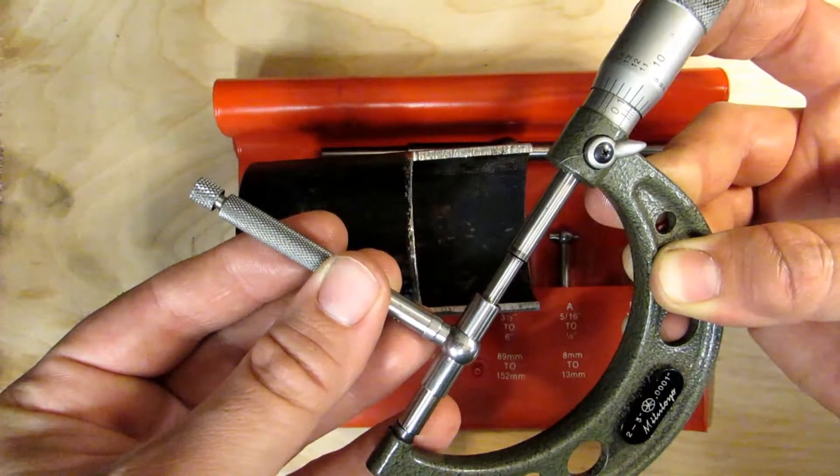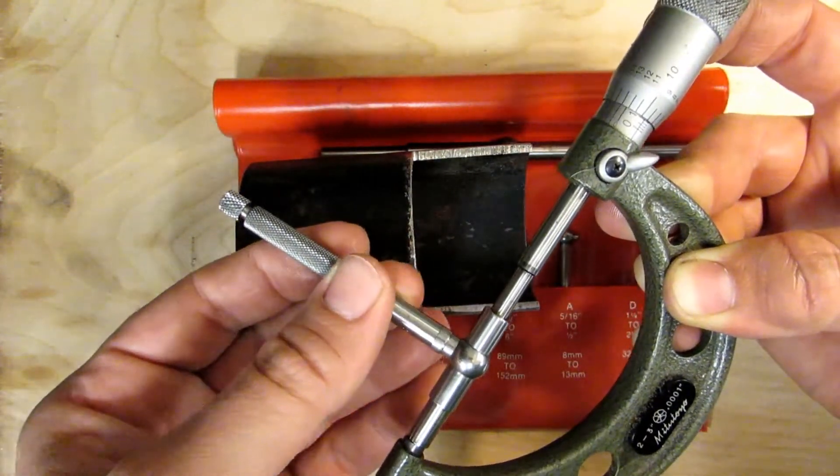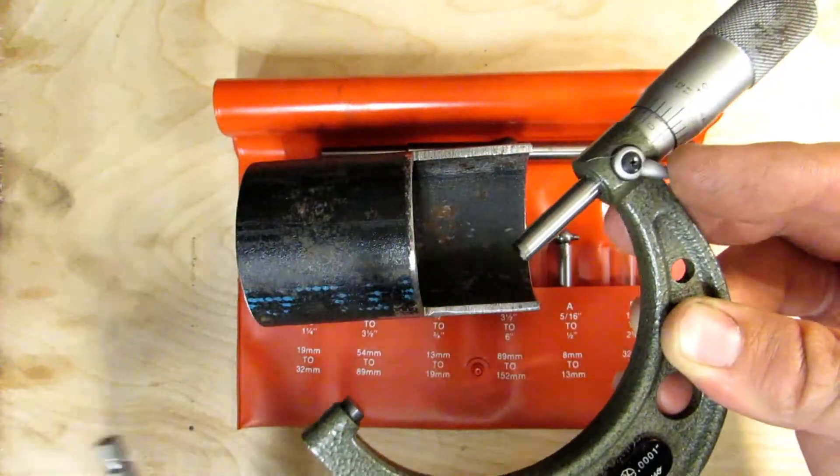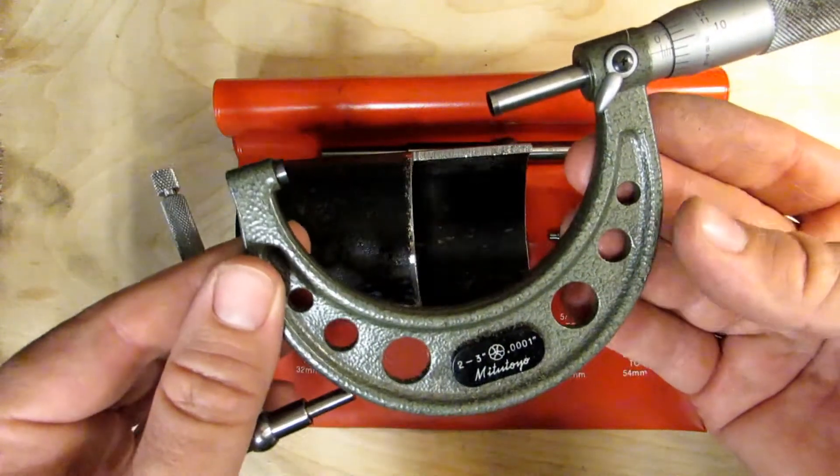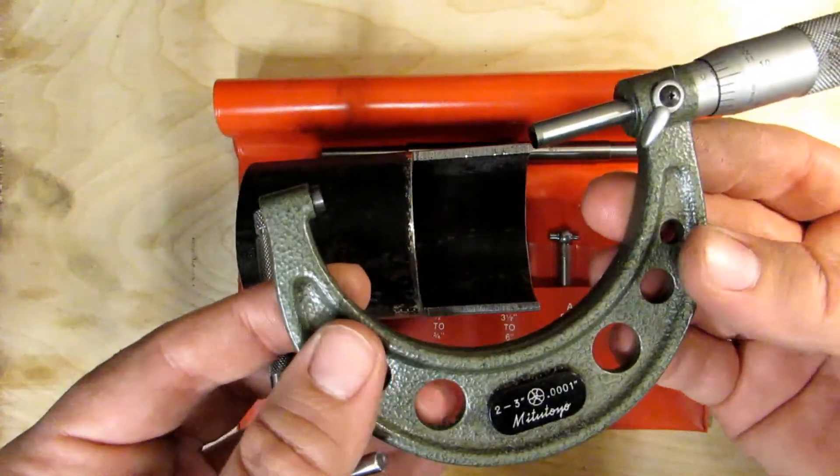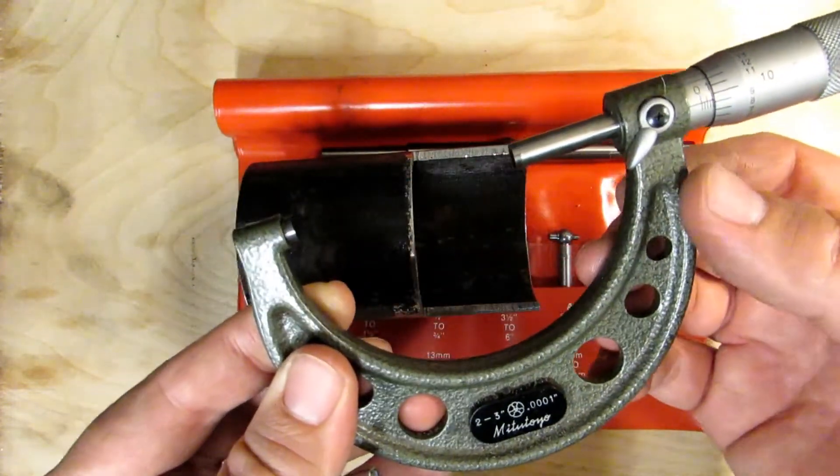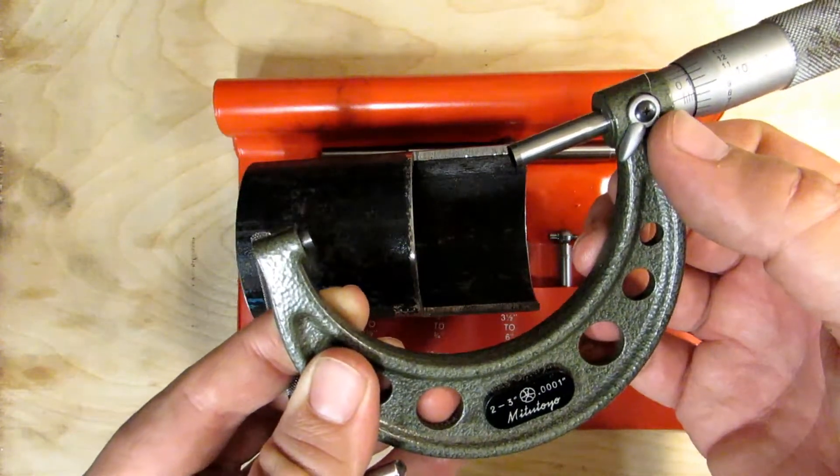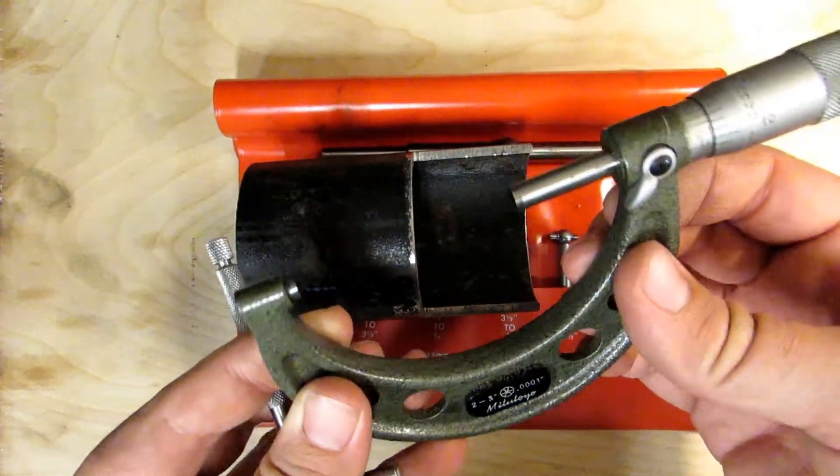You'll feel a point where it starts to drag, right there. So that feels just like it did in the bore of the pipe that I just measured. In this case, you just go ahead and measure it just like you would with a regular micrometer. So this is a 2 to 3 inch mic, and this would be 2.109 and 3 tenths.